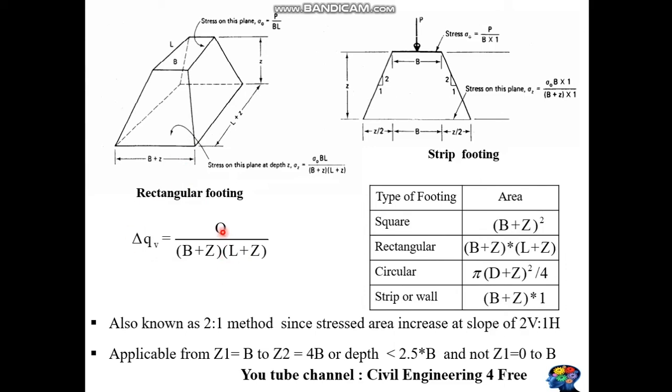For different types of footings—square, rectangular, circular, or strip/wall footing—you can calculate the area using these formulas. The 2-to-1 method is usually applicable for determining stress below footings.